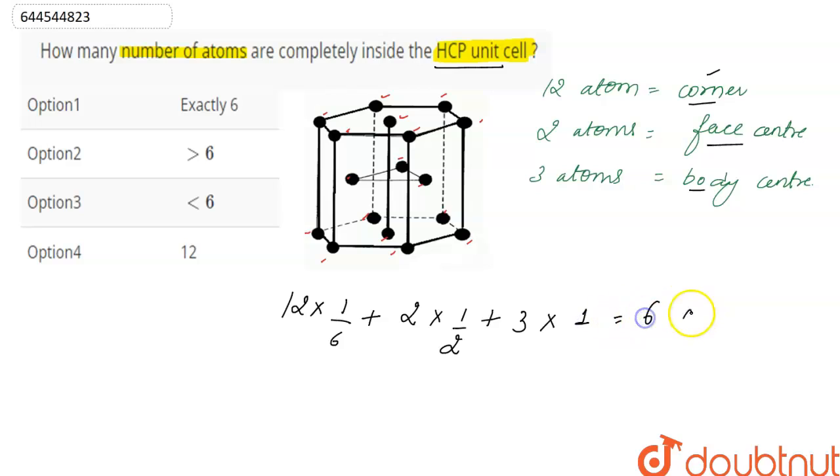So there are total six atoms, effective six atoms in HCP unit cell. So correct option here will be option one, that total exactly six number of atoms are completely inside the HCP unit cell.